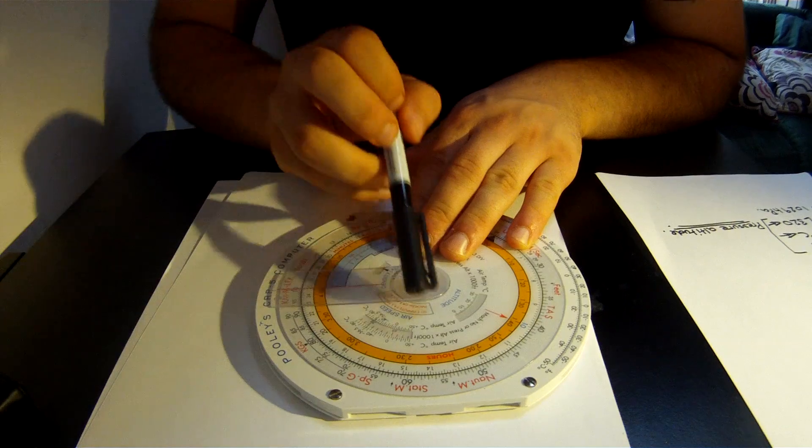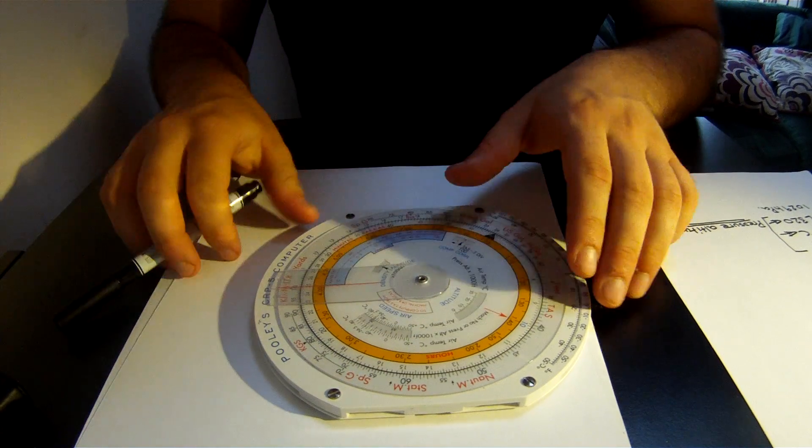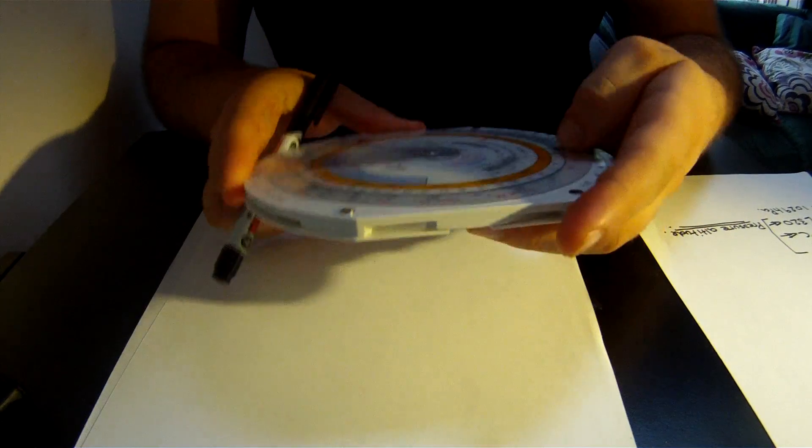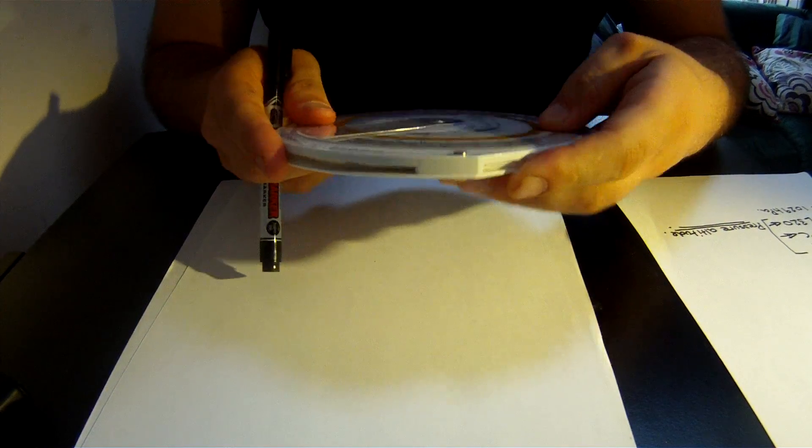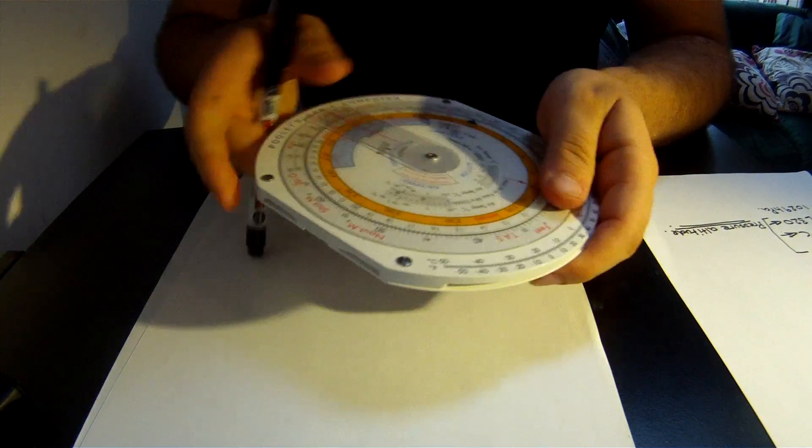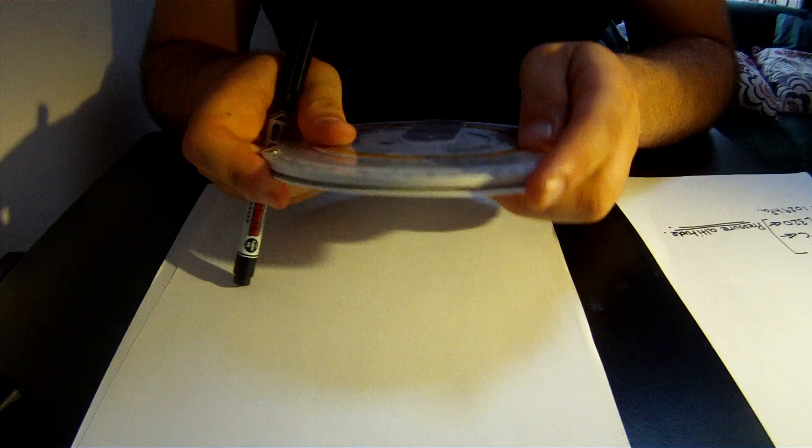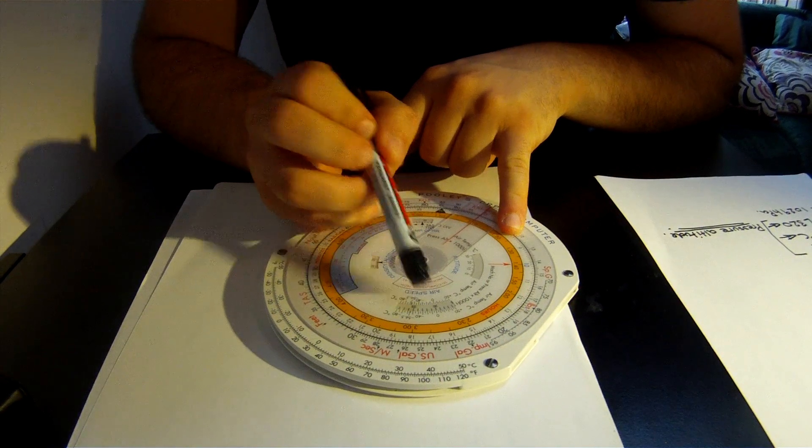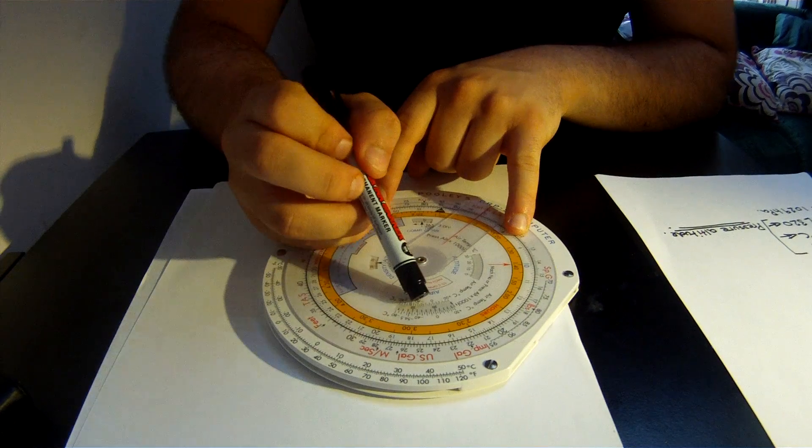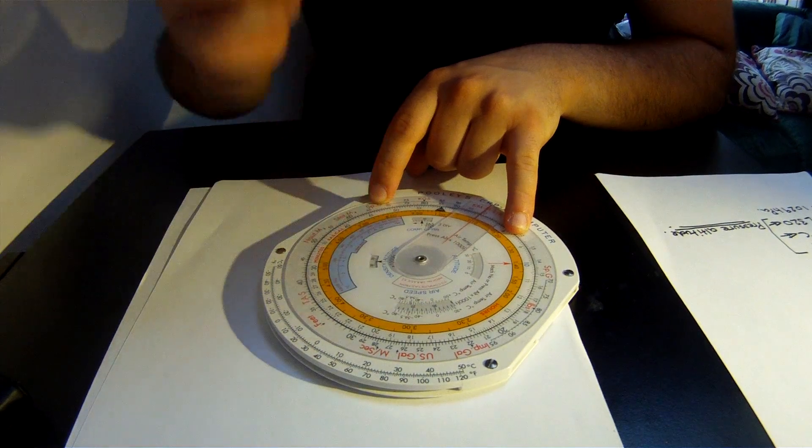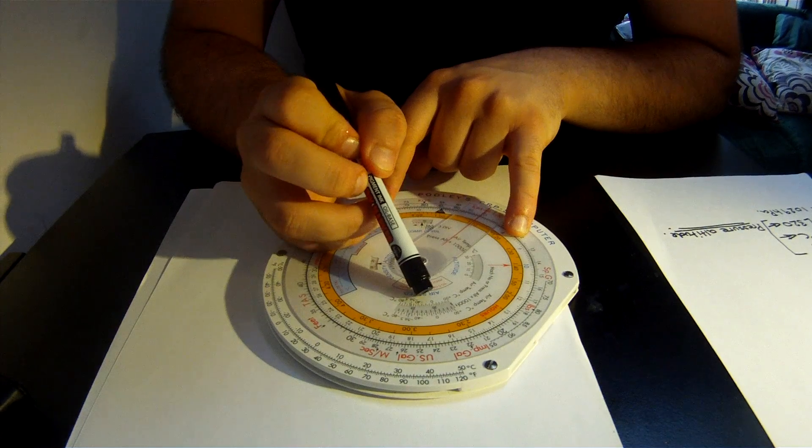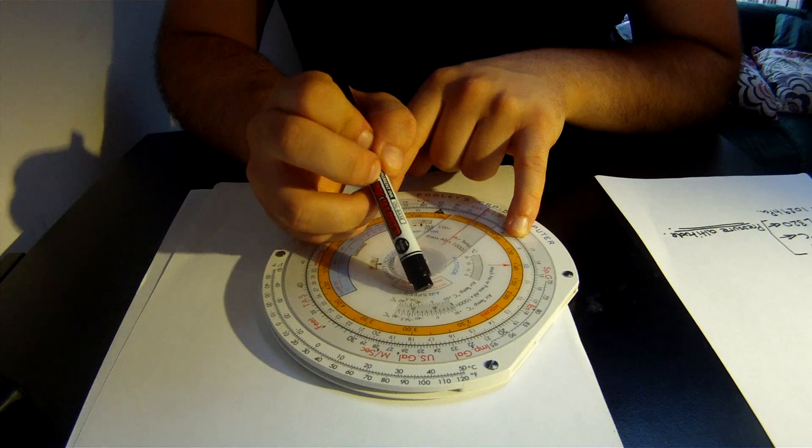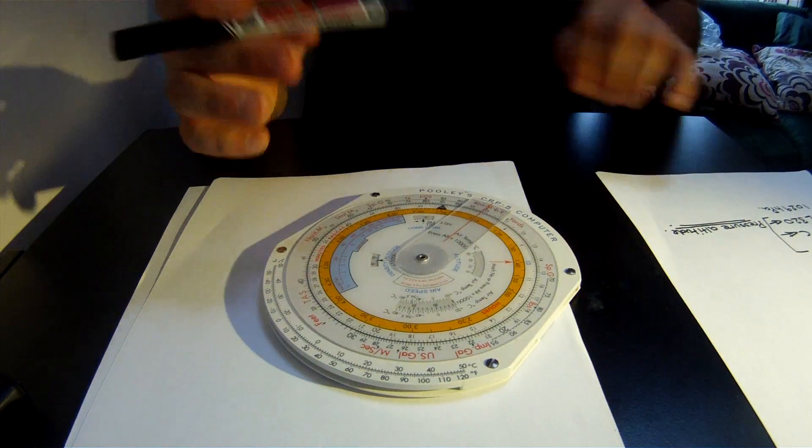You see at the top you've got air temperature, and at the bottom it's the same scale. Inside you've got numbers going from zero to about 75, and these are pressure altitudes times 1000. So if I line zero with 20, this means that at flight level 200, at 20,000 feet pressure altitude, we are going to get a temperature of zero degrees Celsius.